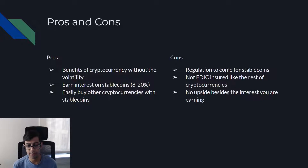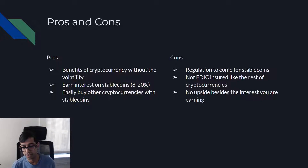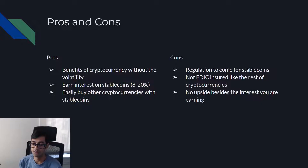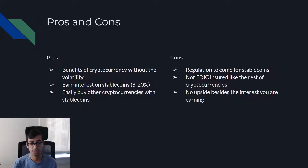The cons are that regulation is coming for stablecoins — that's why the decentralized ones have a big leg up. There's no FDIC insurance, just like the rest of cryptocurrency, and there's no upside besides the interest you're earning, since it's just a one-to-one peg.